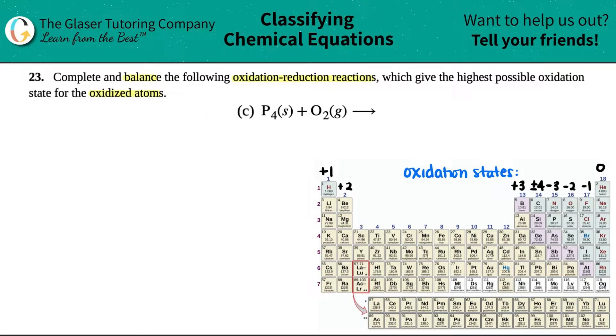So in this equation, we have P4, which is a solid, plus O2 gas yields blah. We have to figure out what blah is. I'm going to write it on the left-hand side just so I can make everything bigger.